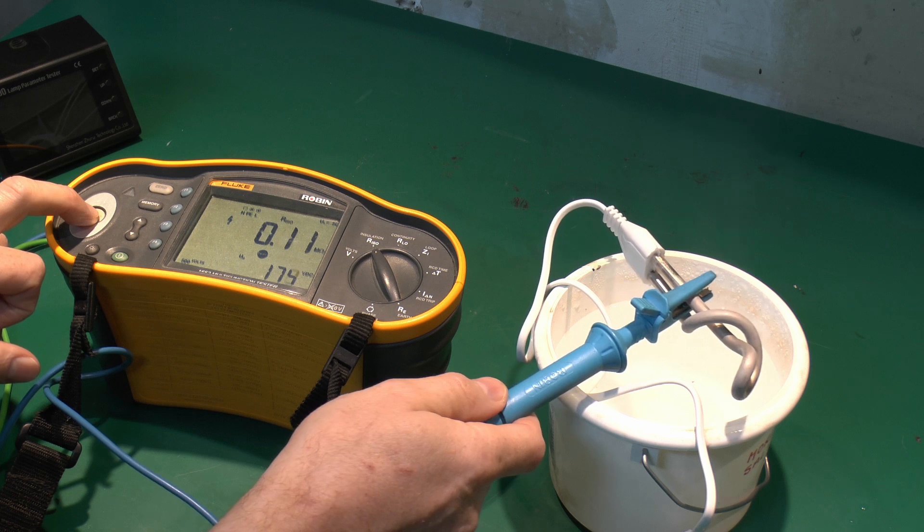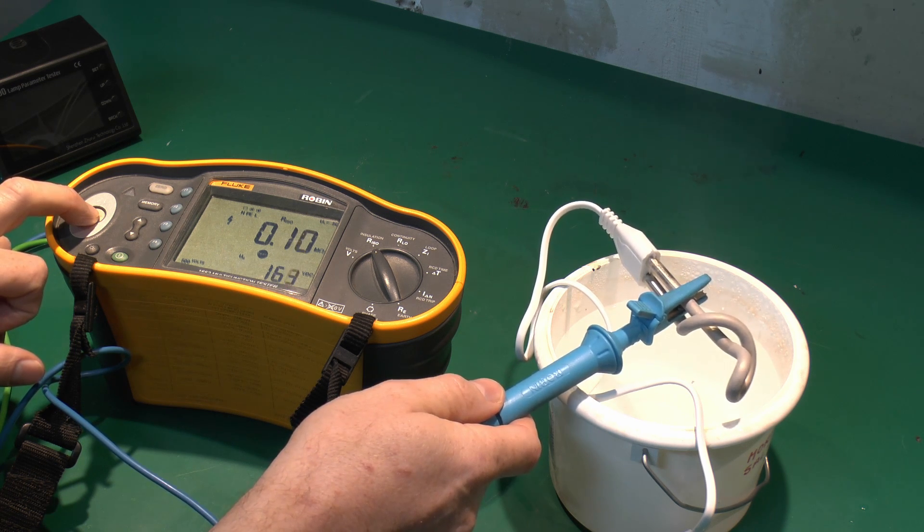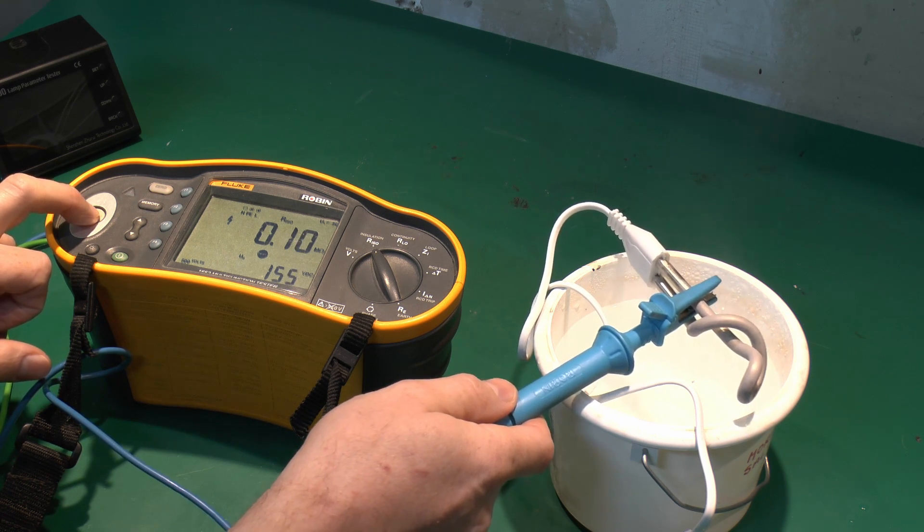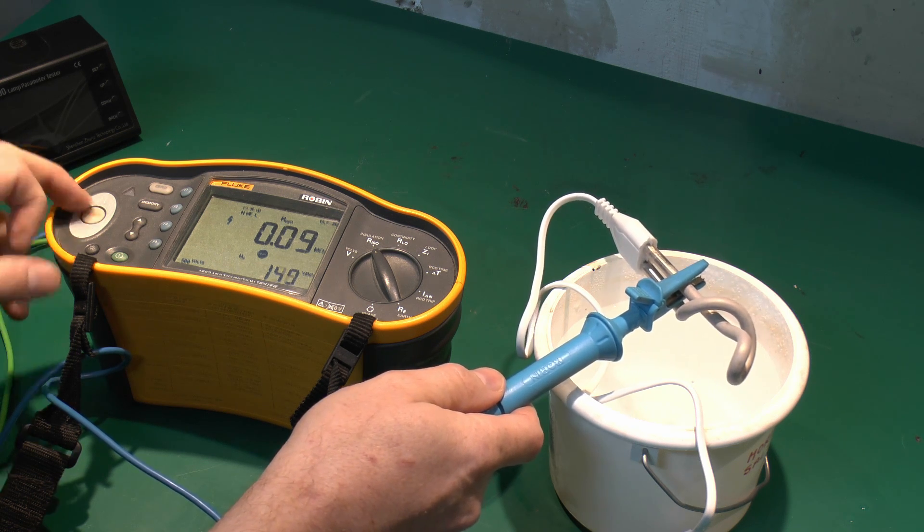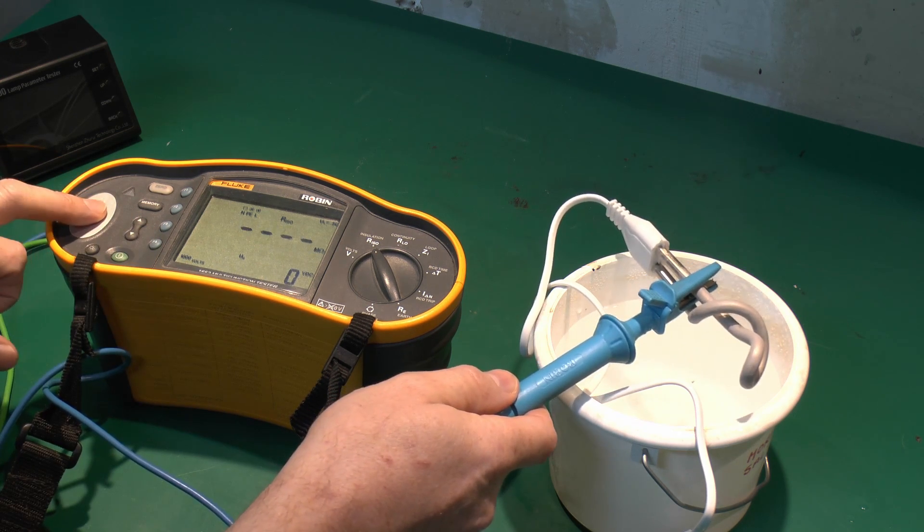Now as you can see there, that is massively impaired. That's actually 0.1 megaohms, so that is actually a big fail. So generally you want to see in the region of 1 megaohm at least. Let's try that on the 1000 volt range.